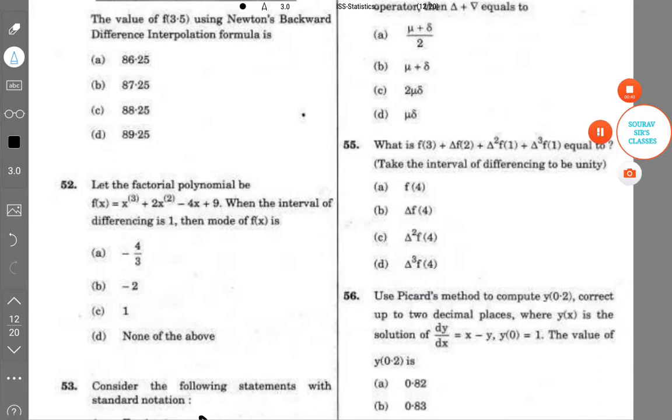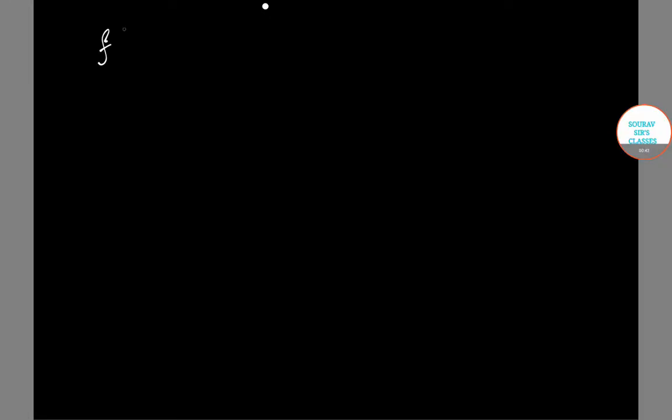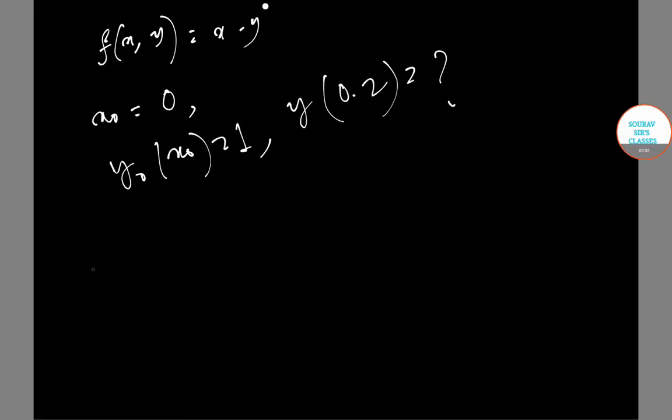Let's see how we approach this. Now here we have f(x,y) = x - y, x₀ = 0, and y(x₀) = 1. So y(0.2) is to be calculated.